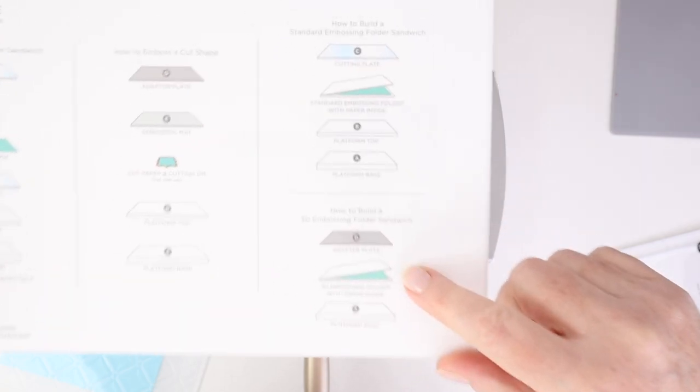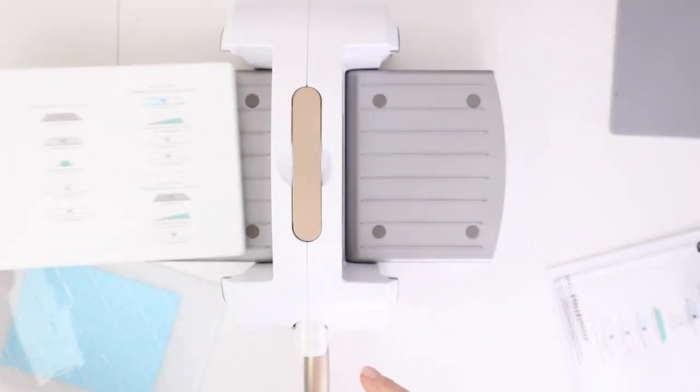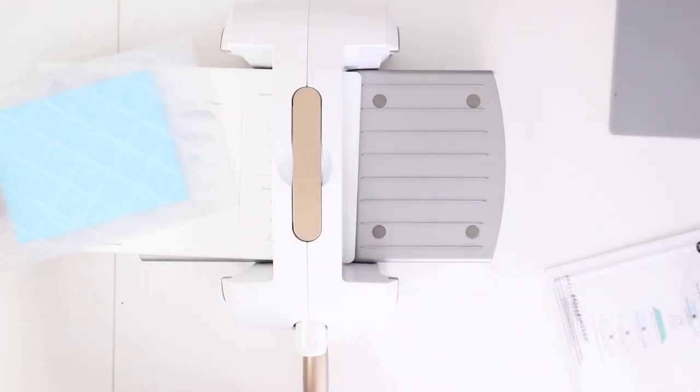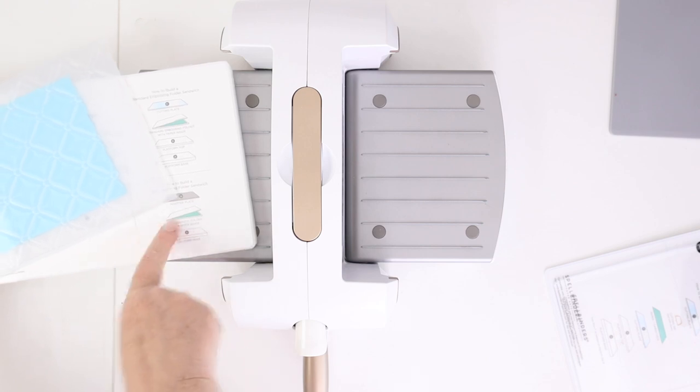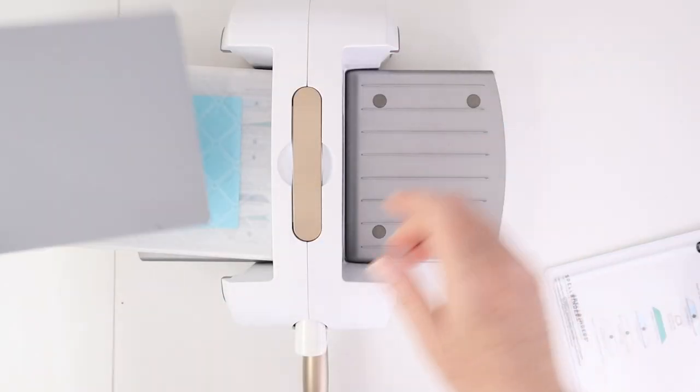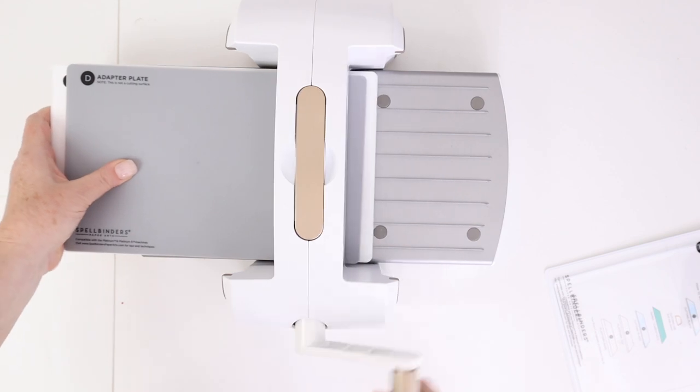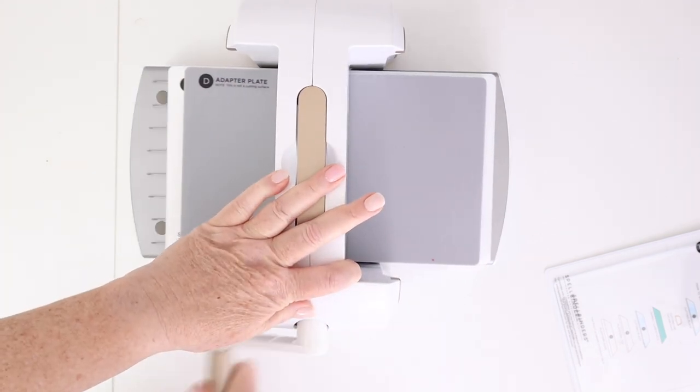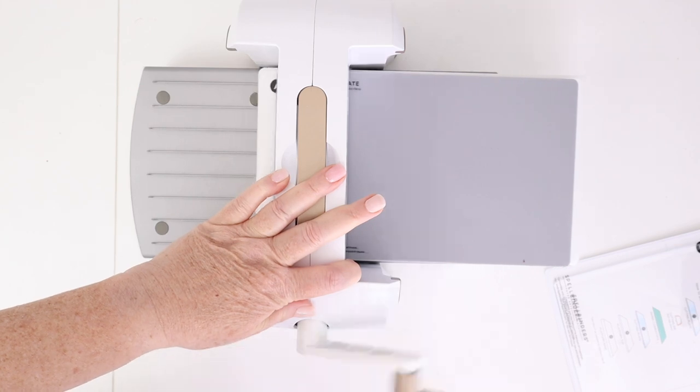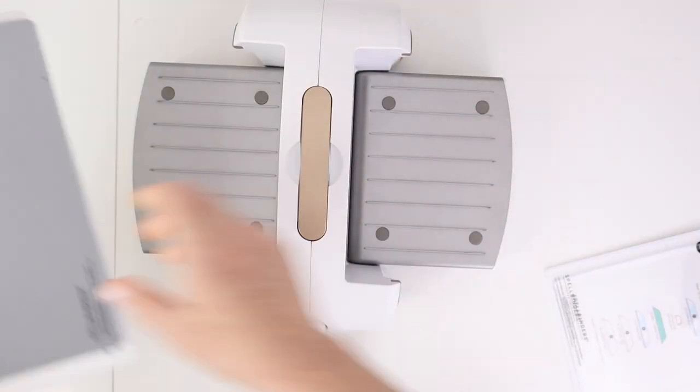Okay, so here's the 3D embossing sandwich on the new universal plate. You have your platform base, then you have your paper inside your 3D embossing folder, and then you have the adapter on top. And it's that adapter that is just thick enough in addition to that 3D embossing folder to make it run through the machine smoothly, but also to apply enough pressure that you're going to get the perfect impression.